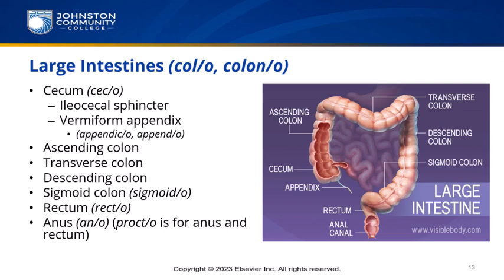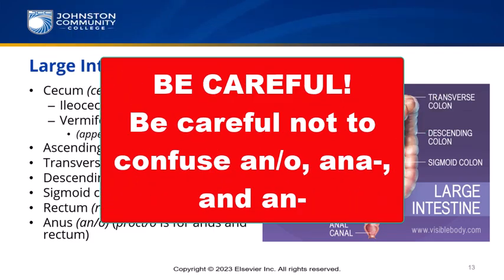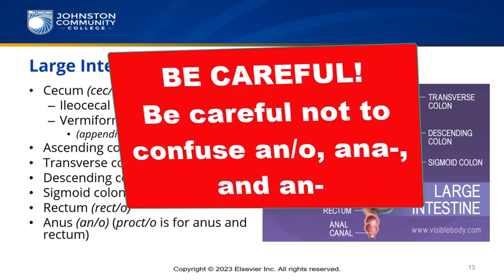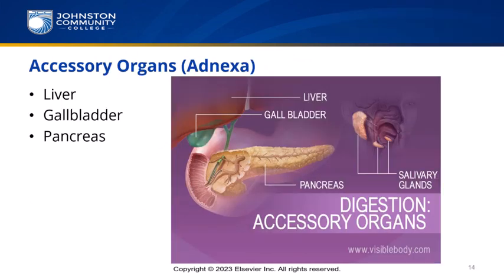Combining forms for the large intestine include: ceco for cecum, recto for rectum, and ano or procto for anus and rectum. Be careful not to confuse ano with the prefix ana or an. Next, we'll look at accessory organs — or adnexa — which include the liver, gallbladder, and pancreas.